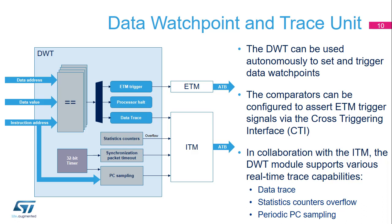The current data and PC value can also be captured to complement the trace information. Complex conditions mixing address and data comparisons are programmable. In addition to the comparison logic, the DWT contains 8-bit statistics counters. When an overflow condition occurs on any of them, the DWT informs the ITM to issue a trace packet to report this overflow to the debugger.